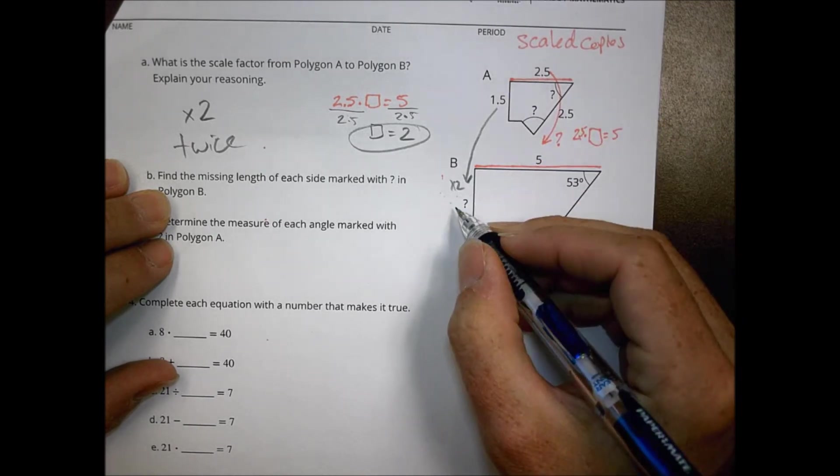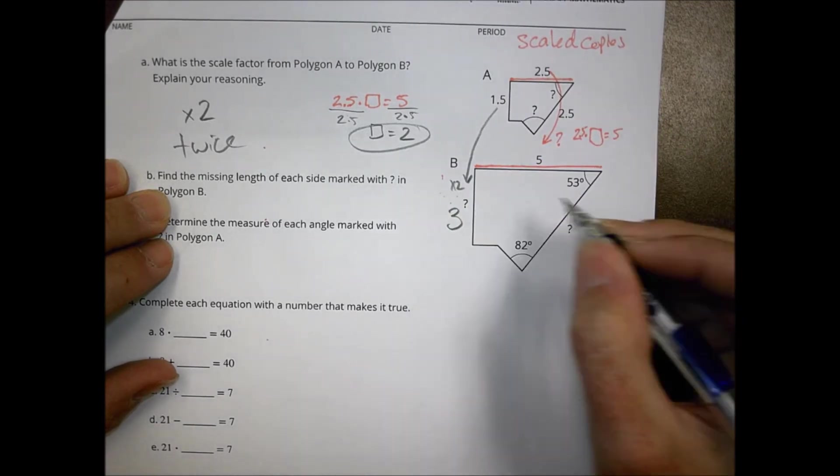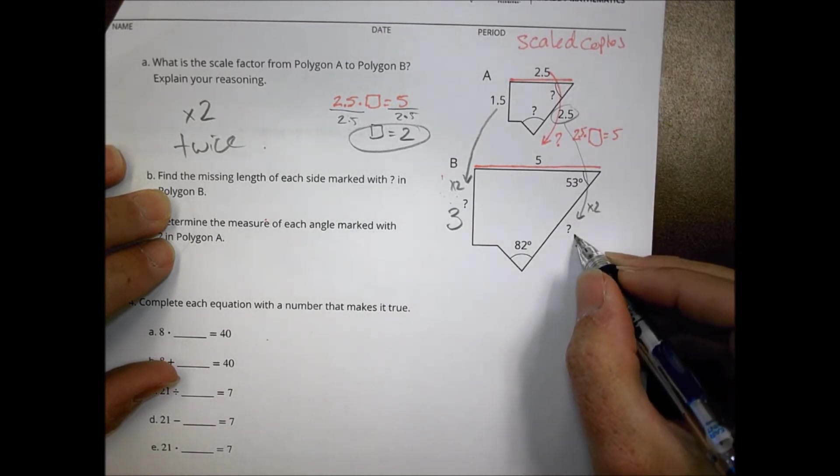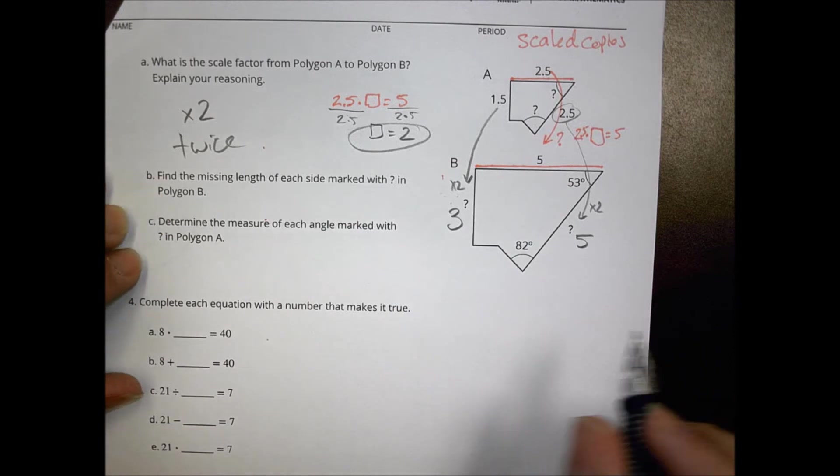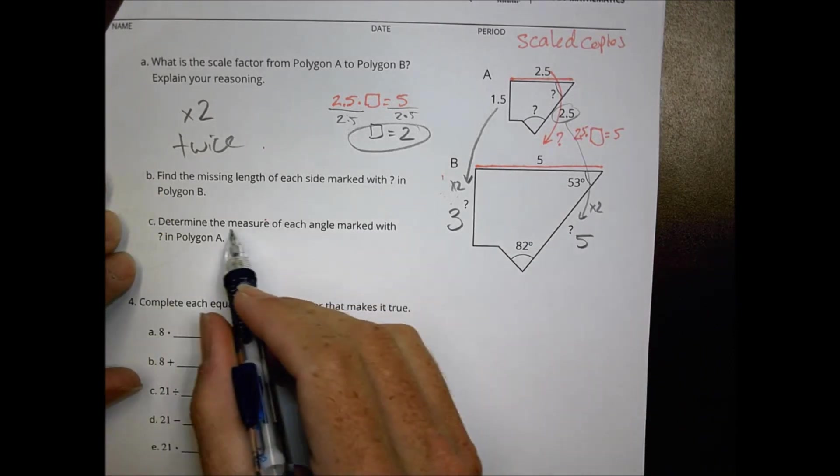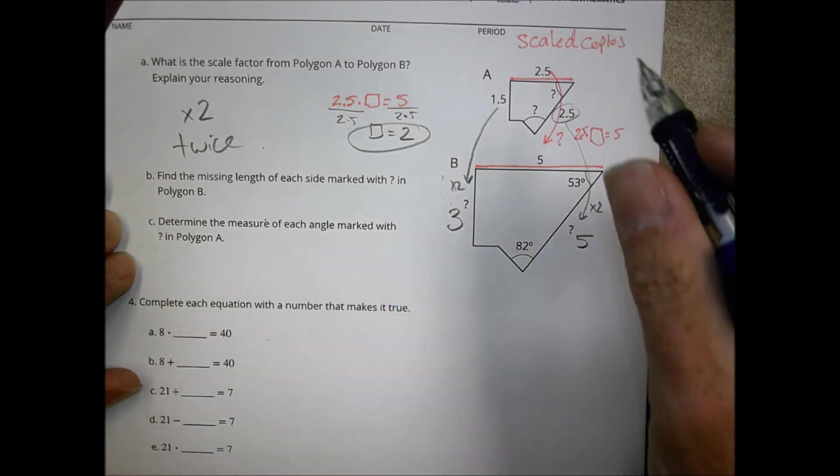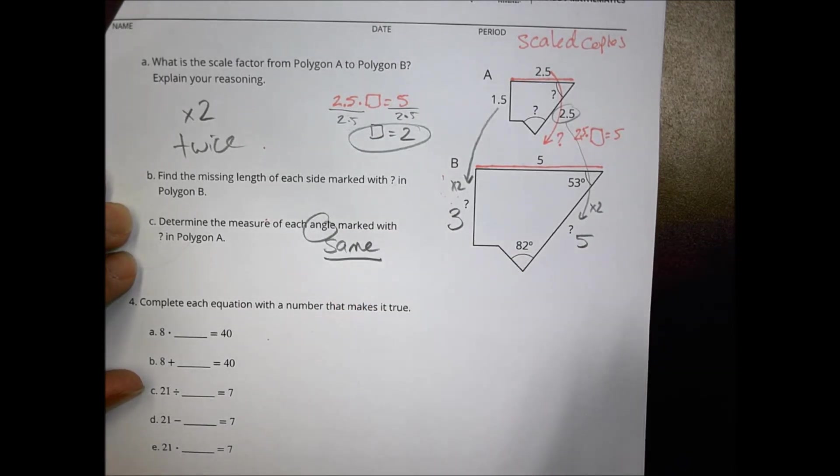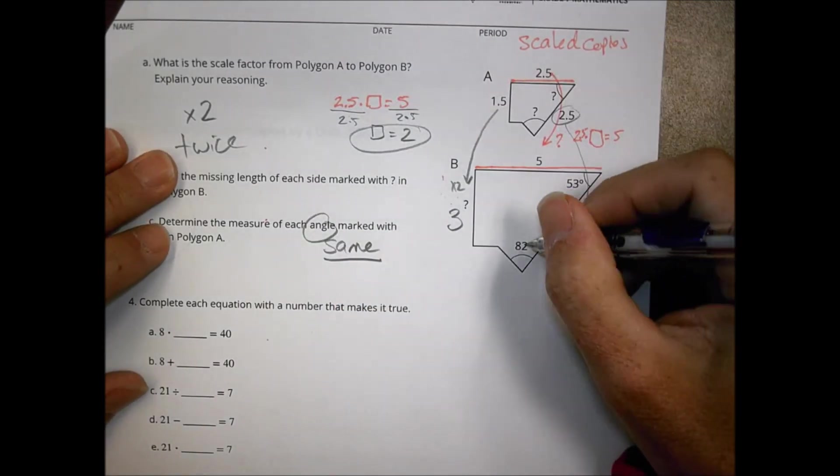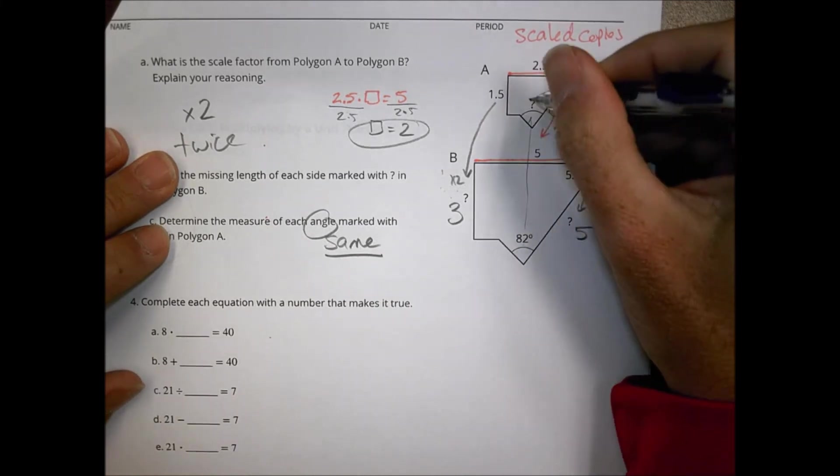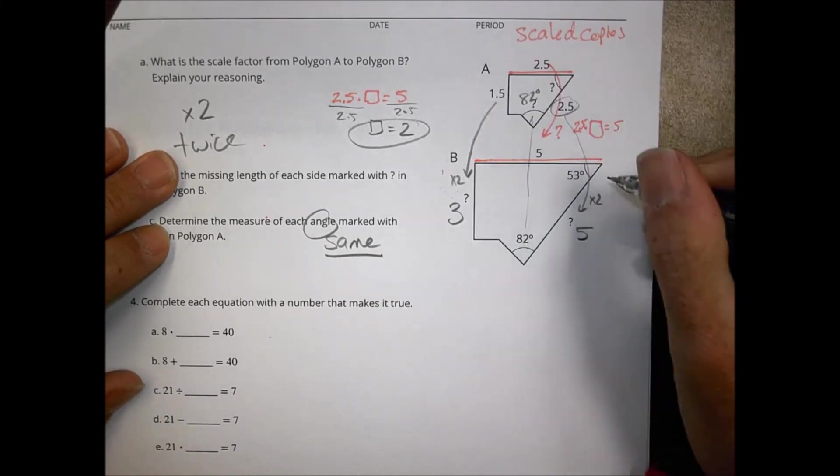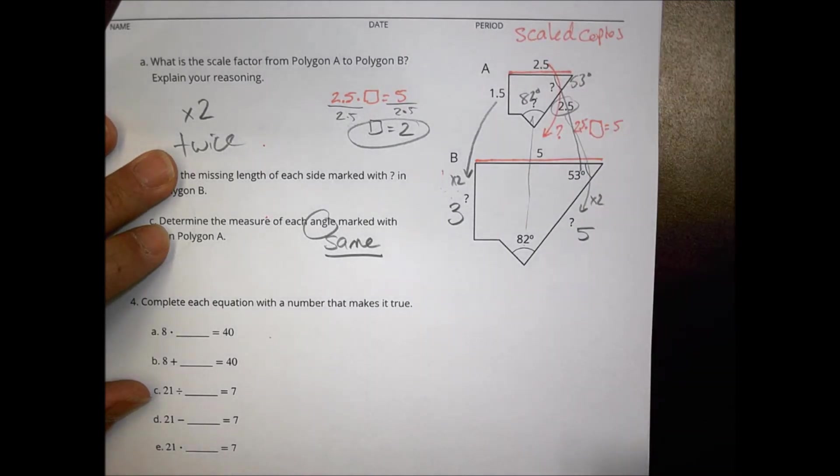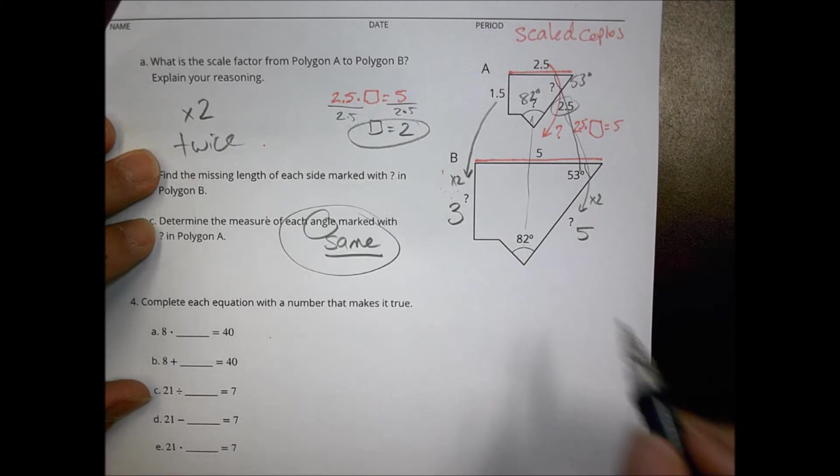So to find the missing lengths then we look here to do 1.5 times 2. We would say 1.5 times 2 is 3. And here 2.5 times 2 again it's going to be 5. So those are our missing lengths. To find the measure of each angle, well angles all have to be the, what did we say before, the same. So that's a simple one. If this is 82 then this one is also 82 degrees. And if this one's 53 then this one is also 53 degrees. Because they have to be the same.